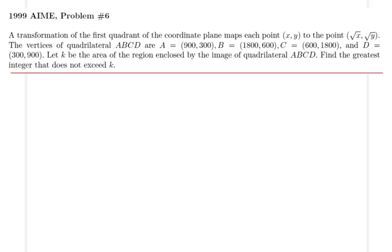Hello everyone. In this lecture we will be going over 1999 AIME problem number 6. In this problem we are told that a transformation will take each point (x, y) in the coordinate plane and map it onto (√x, √y).